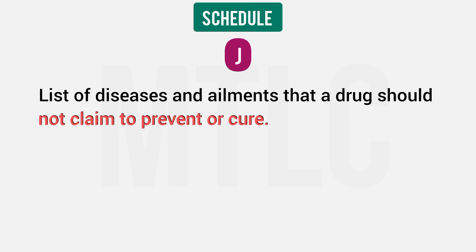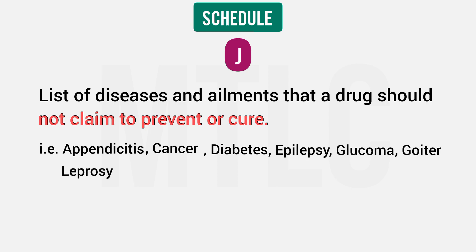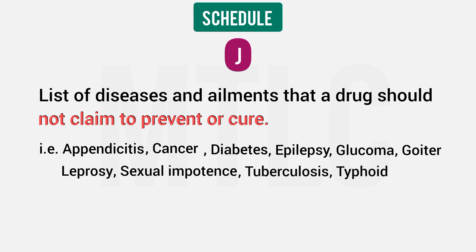Schedule J examples include: appendicitis, cancer, diabetes, epilepsy, glaucoma, goiter, leprosy, sexual impotence, tuberculosis, typhoid, and others. These are diseases for which drug claims are prohibited.